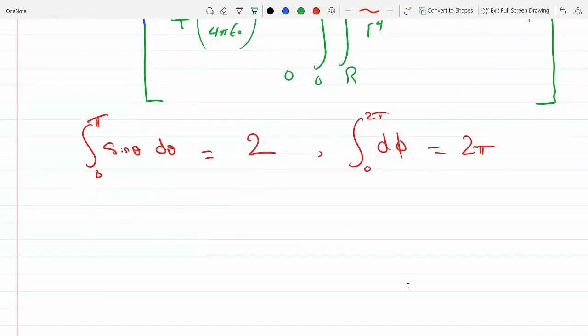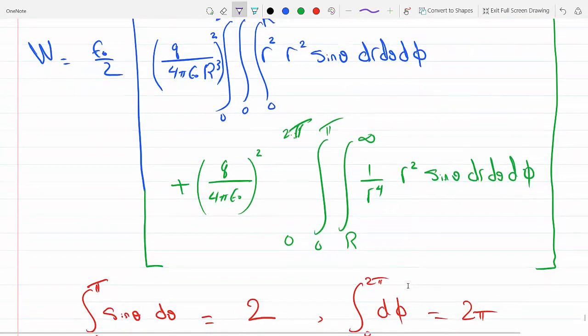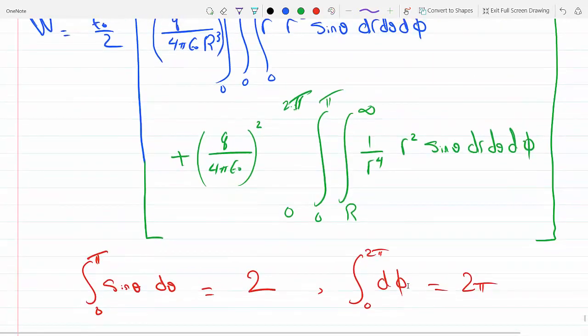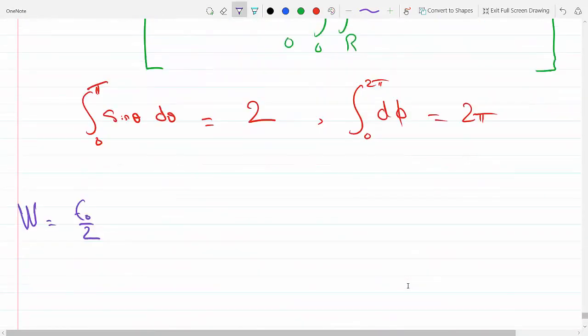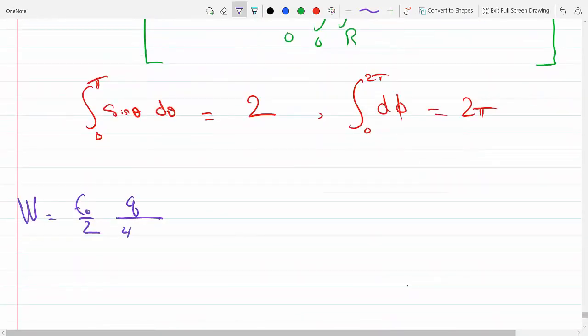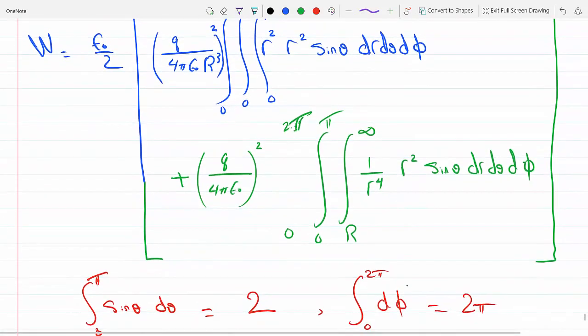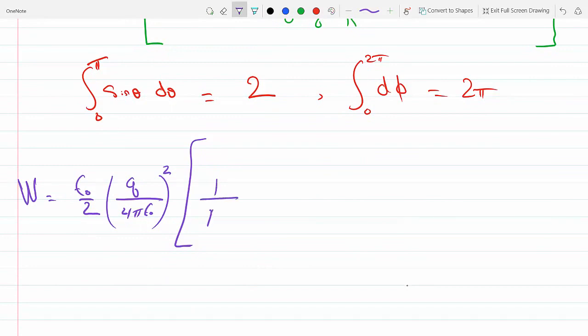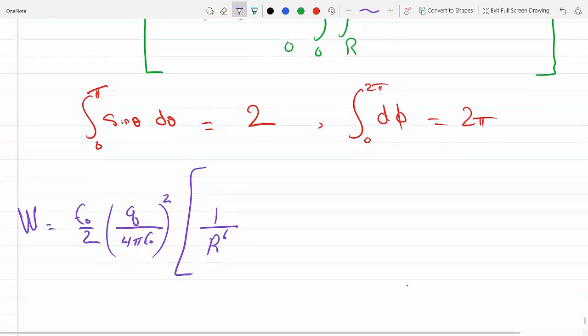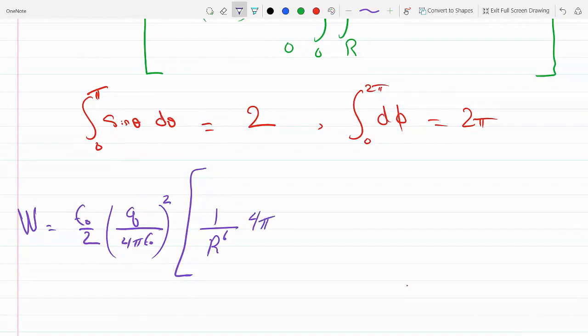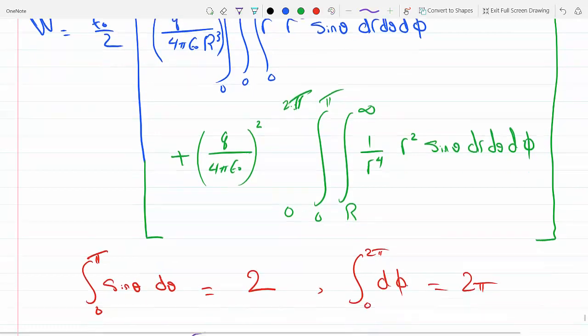So plugging all that in, we will get W equal epsilon_0 over 2. I'm going to factor Q over 4πε_0 squared out from both of them. From the first integral I have left 1 over r⁶, because r³ squared, and we said we have a 4π coming from sin θ dθ dφ, and we have r⁴ dr from 0 to R.